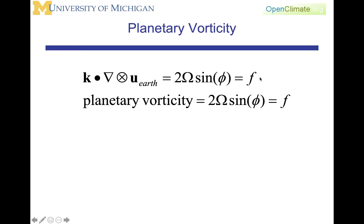f, this quantity that we've introduced earlier and then in our scale analysis saw how important it was for large-scale mid-latitude flows. f is the planetary vorticity, it's two omega sine of the latitude, which is k dot del cross the velocity of the Earth. This is the planetary vorticity.